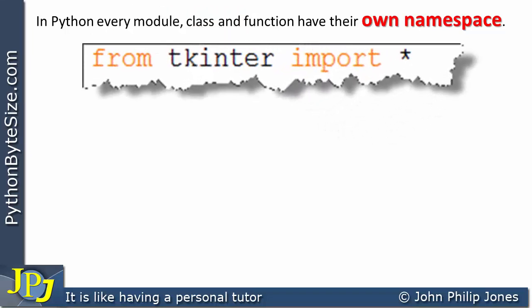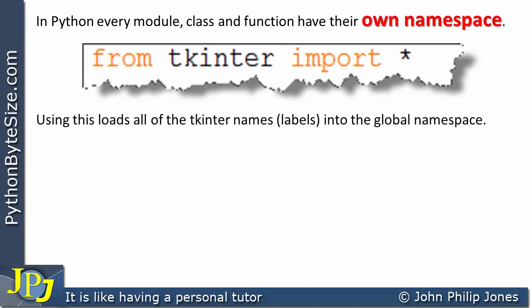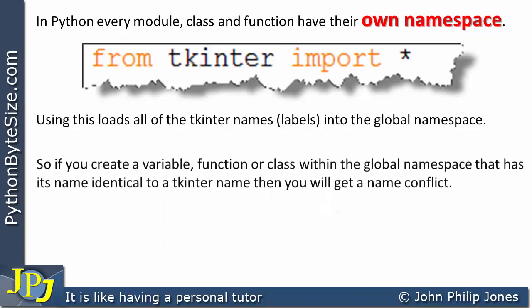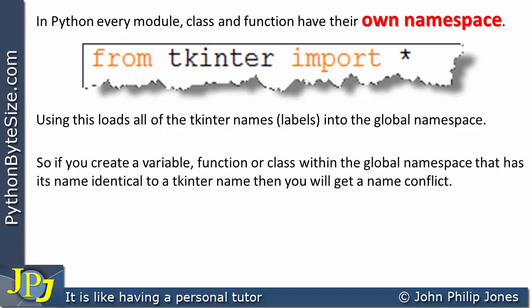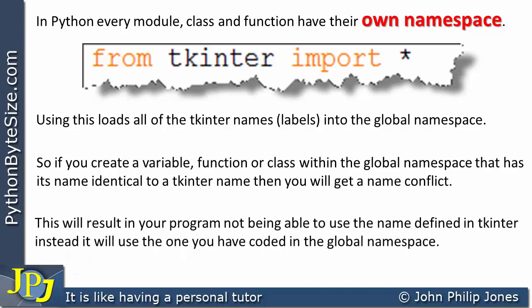When you do 'from tkinter import *', you're loading all of the tkinter names — the labels identifying instances of classes — into the global namespace. So if you create a variable, function, or class in the global namespace with a name identical to a tkinter name, you will get a name conflict. This will result in your program not being able to use the name defined in tkinter; instead it will use the one you have coded in the global namespace.